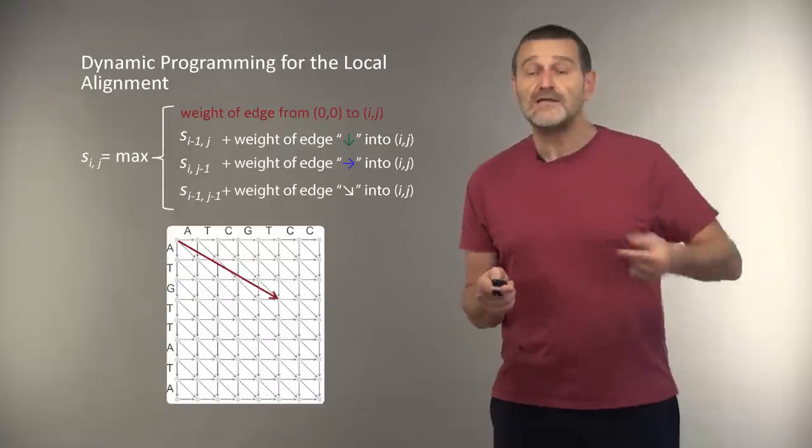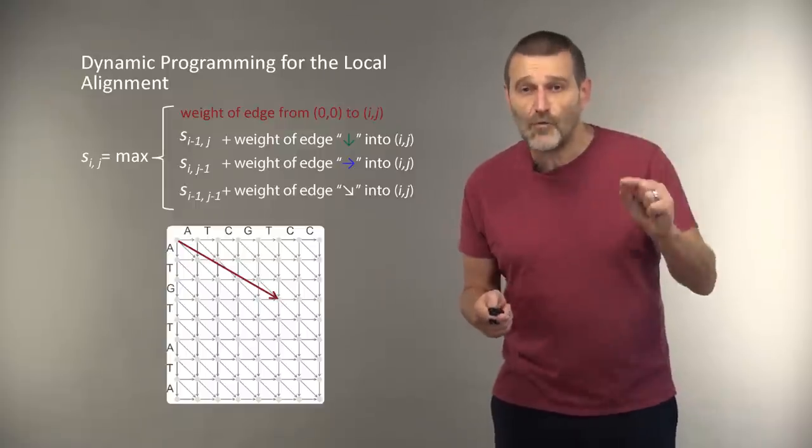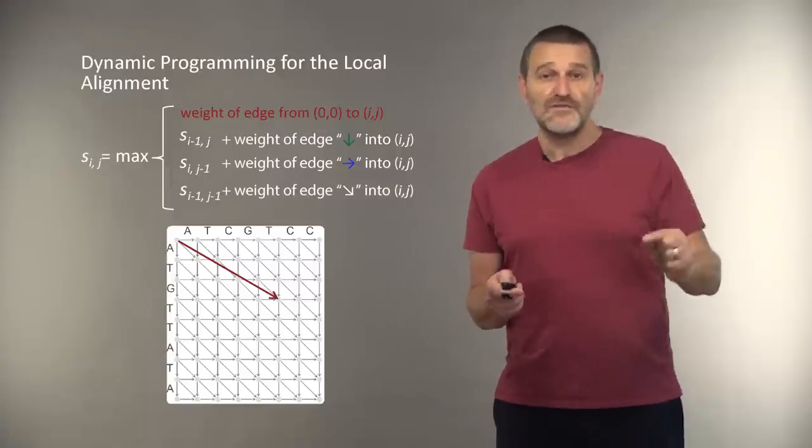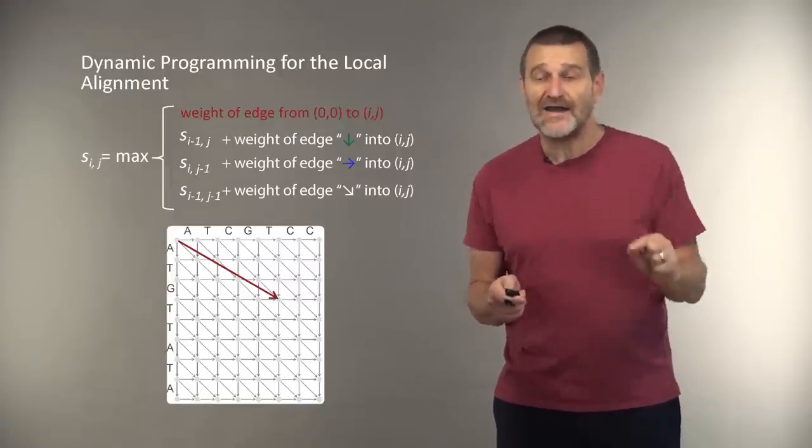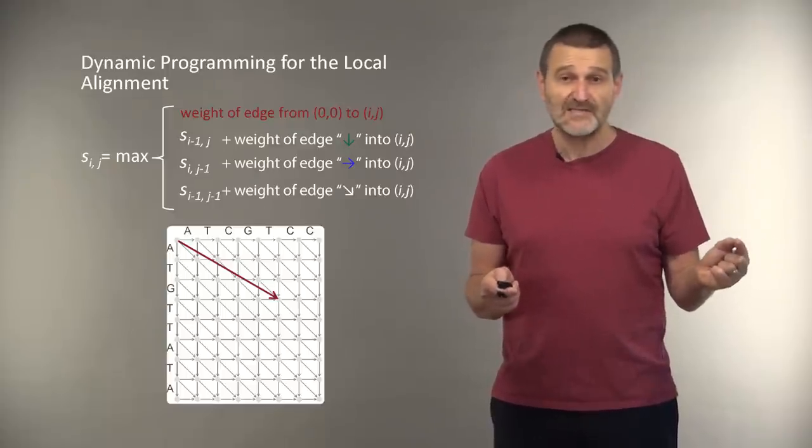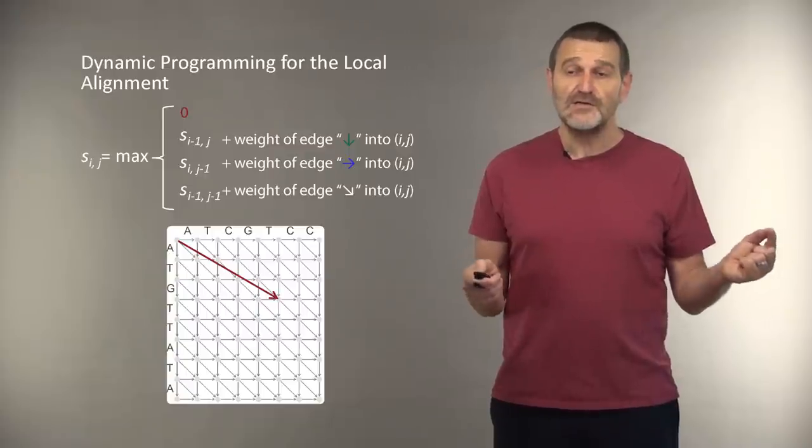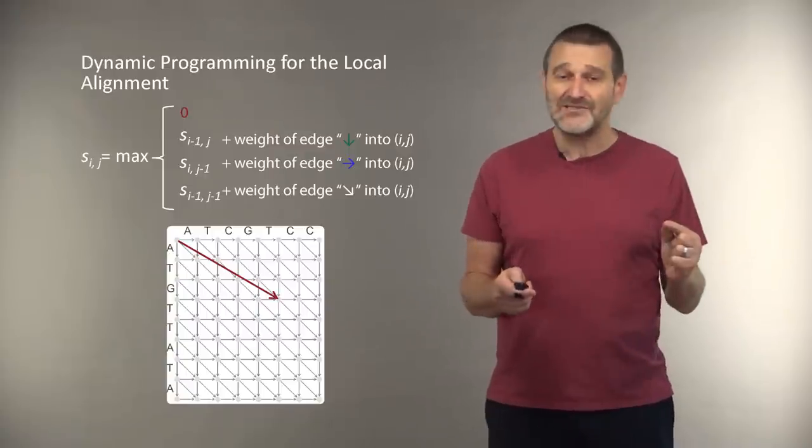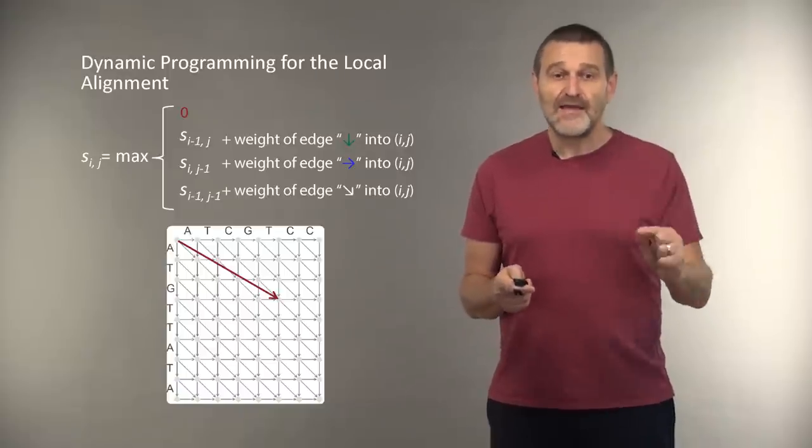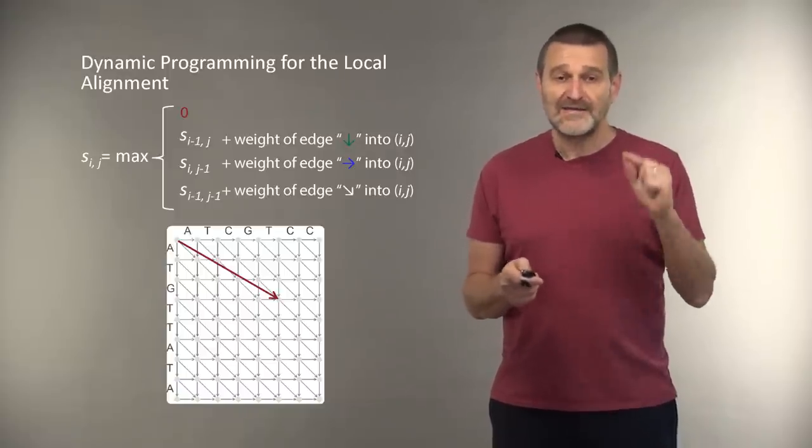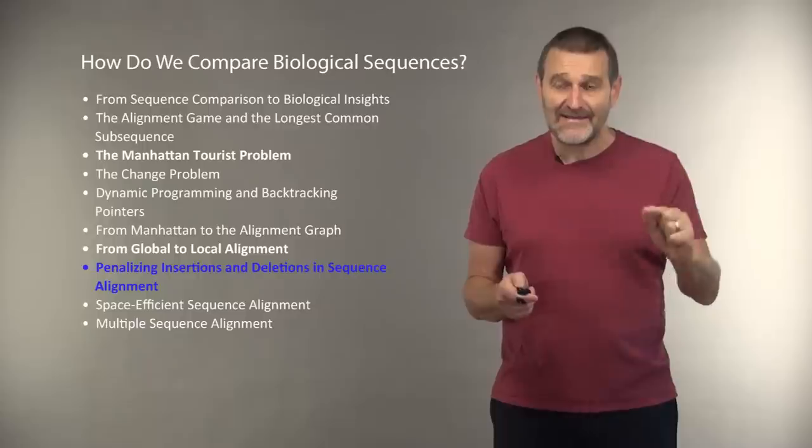Which means that we need to add the fourth term in this recurrency, which is the weight of edge from 0,0 to i,j. And the weight of this edge, since our taxi rides are free, is zero. And that's the only change that we need to implement to make our local alignment algorithm practical and fast.